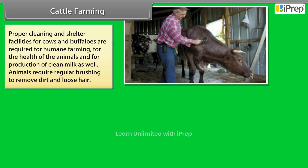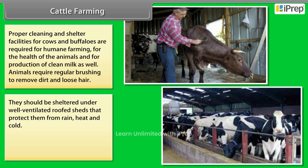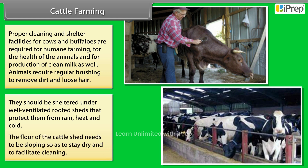Proper cleaning and shelter facilities for cows and buffaloes are required for humane farming, for the health of the animals, and for production of clean milk as well. Animals require regular brushing to remove dirt and loose hair. They should be sheltered under well-ventilated roofed sheds that protect them from rain, heat and cold. The floor of the cattle shed needs to be sloping so as to stay dry and to facilitate cleaning.